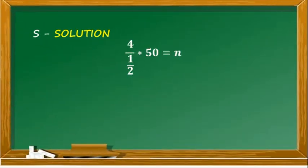For the solution, 4 divided by 1 half is 8. Then, we are going to multiply 8 by 50 to get the total amount of Sheila's earning. The answer will be equal to 400 pesos.